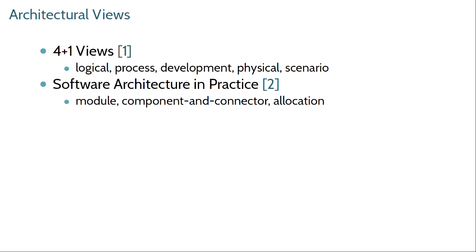The textbook Software Architecture in Practice by Bass et al. has three views: module, component and connector, and allocation. Structure is really important and you'll find this in all architectural views. The module view focuses on the actual structure of the software. Component and connector is the behavioral view — how do the parts of your architecture connect to and communicate with each other?